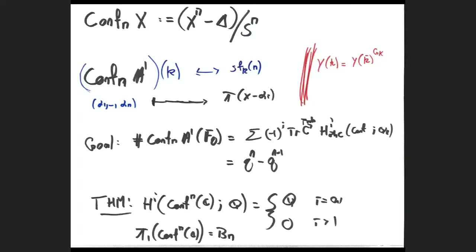Q: Is there an easy geometric description of the homomorphism from the braid group to Z? I think it's the signed number of crossings. When n = 2, the braid group is just Z because you keep track of crossings. Yes, it should be the signed number of crossings — that's what it is.